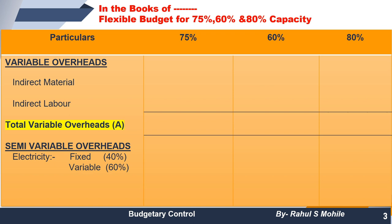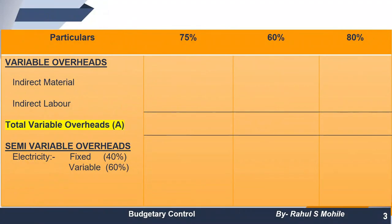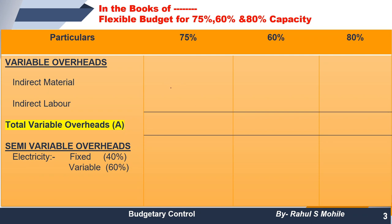First we look at variable overheads. We have two items: indirect material and indirect labor. Indirect material is 7,500 and indirect labor is 22,500 — these are for 75% capacity. To find the value for 60% capacity, we need to frame an equation and cross multiply. If 75% capacity gives 7,500 for indirect material, then for 60% capacity we calculate: 7,500 × 60 ÷ 75.